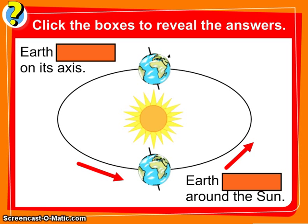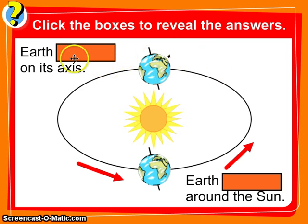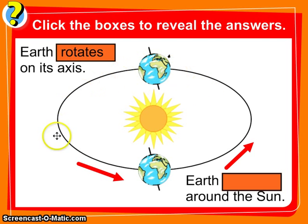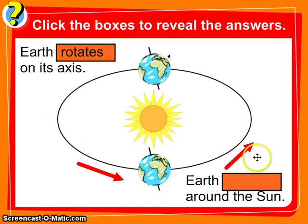Let's review these two terms. Look at this image — the earth is blanking on its axis. What's it doing? It's rotating. And here you can see that the earth is blanking around the sun. What would we call it when one object moves around another? Revolution, or to revolve.